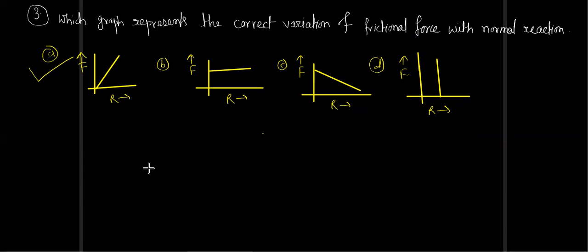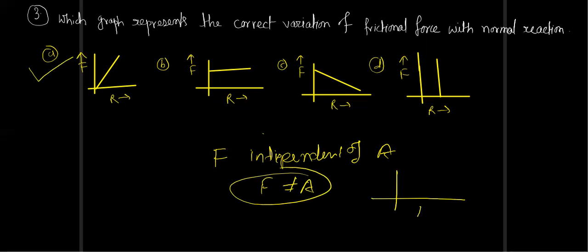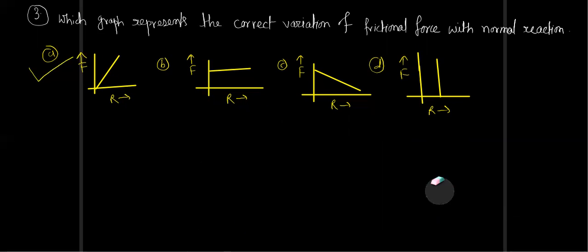Another question: what will be the correct graph representing the variation of frictional force with surface area? Frictional force is independent of area. Since f does not depend upon area, the proper graph will be a straight horizontal line having a certain intercept on the y-axis, with the value remaining the same for large amounts of area.